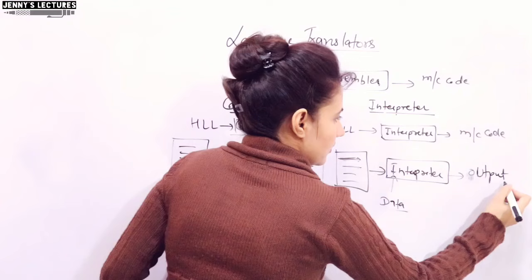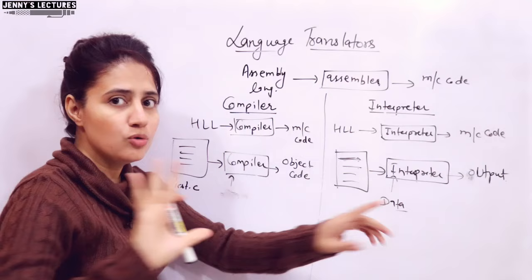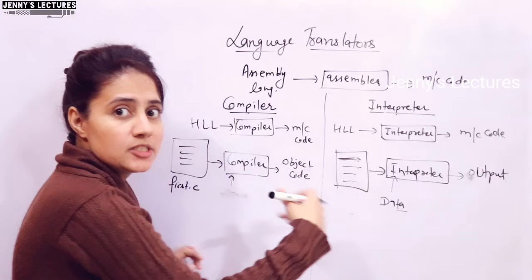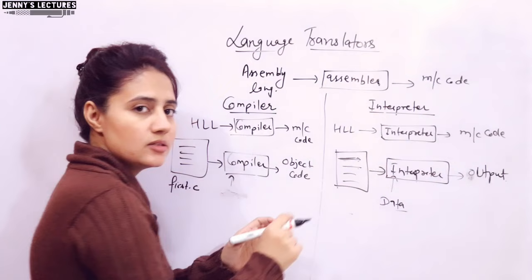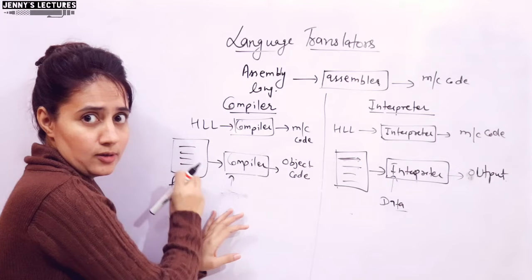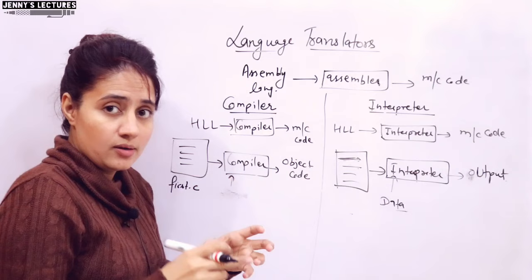With the interpreter, you directly get output — no separate object code file is created. So one difference is: with the compiler, object code is created; with the interpreter, no object code, no separate file for object code. Another difference is speed: the interpreter is slower because it executes line by line — it takes one line, interprets it, converts it into object code, runs it, then takes the second line. The CPU waits each time. The time to execute compiled code is much less, so the interpreter runs slower than compiled code.